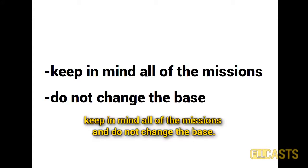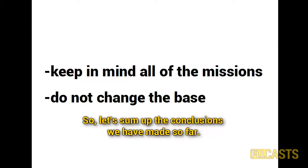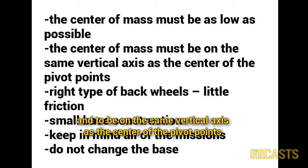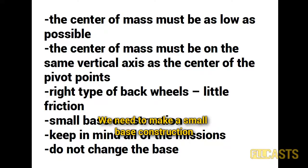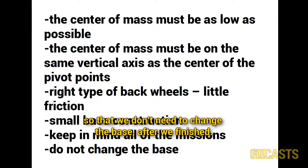So we reach the following two conclusions: keep in mind all of the missions and do not change the base. To sum up: we need the center of mass of the robot to be as low as possible and on the same vertical axis as the center of the pivot points. We have to choose the right type of back wheels so that they have little friction. We need to make a small base construction and keep in mind all of the missions during constructing, so that we don't need to change the base after we finish.